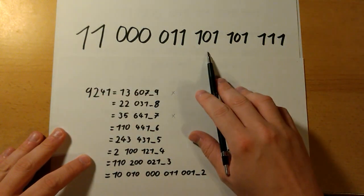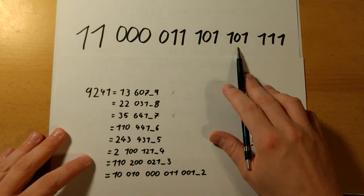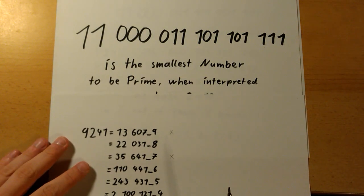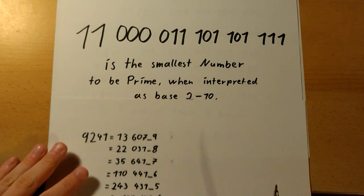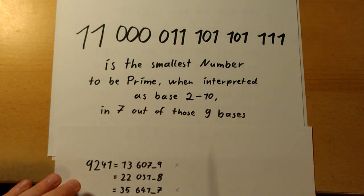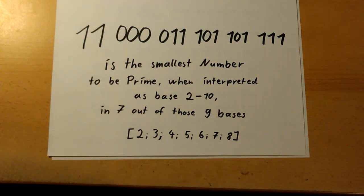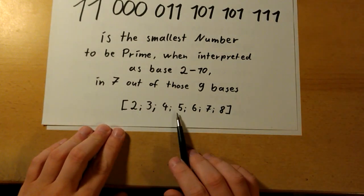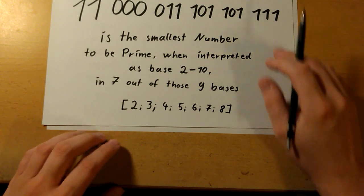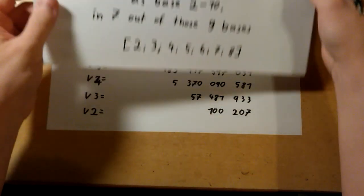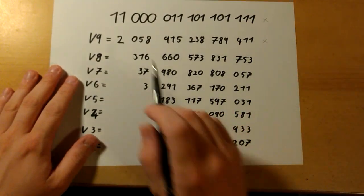11 quadrillion 11 billion 101 million 101 thousand 111, which is the smallest number to be prime when interpreted as a base 2 to 10 number in seven out of the nine bases—namely 2, 3, 4, 5, 6, 7, and 8. Seven consecutive bases, that's nice.